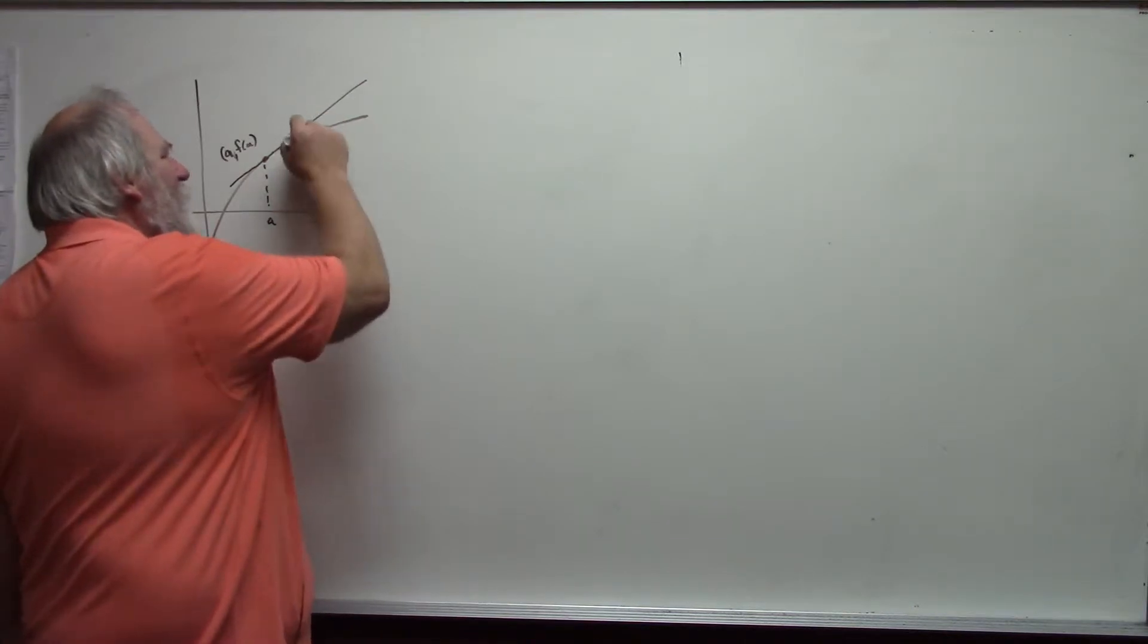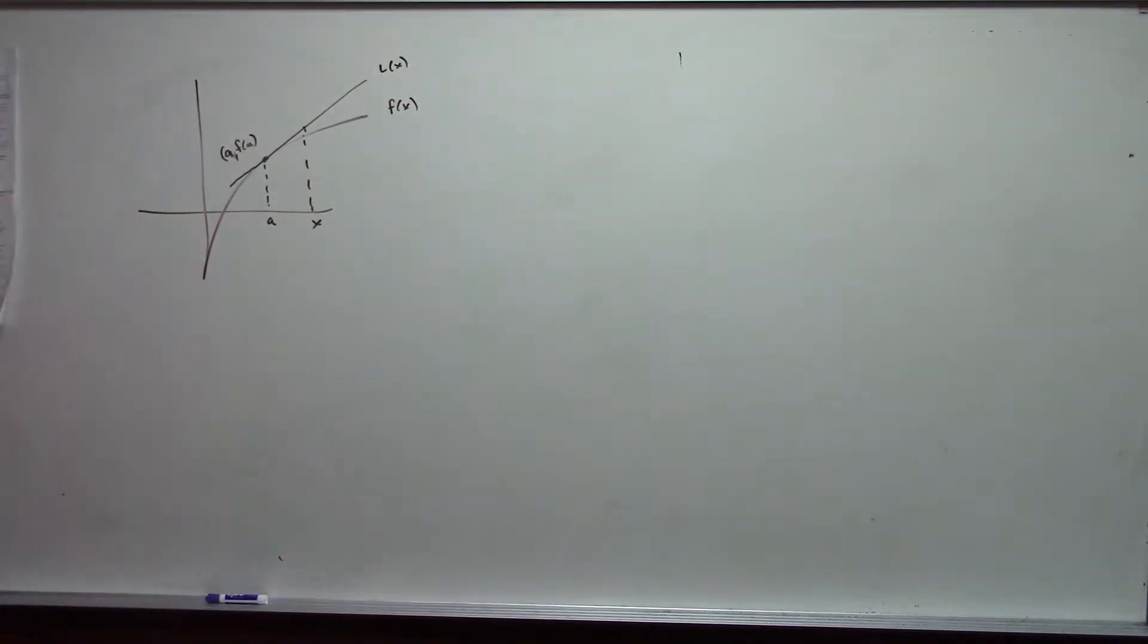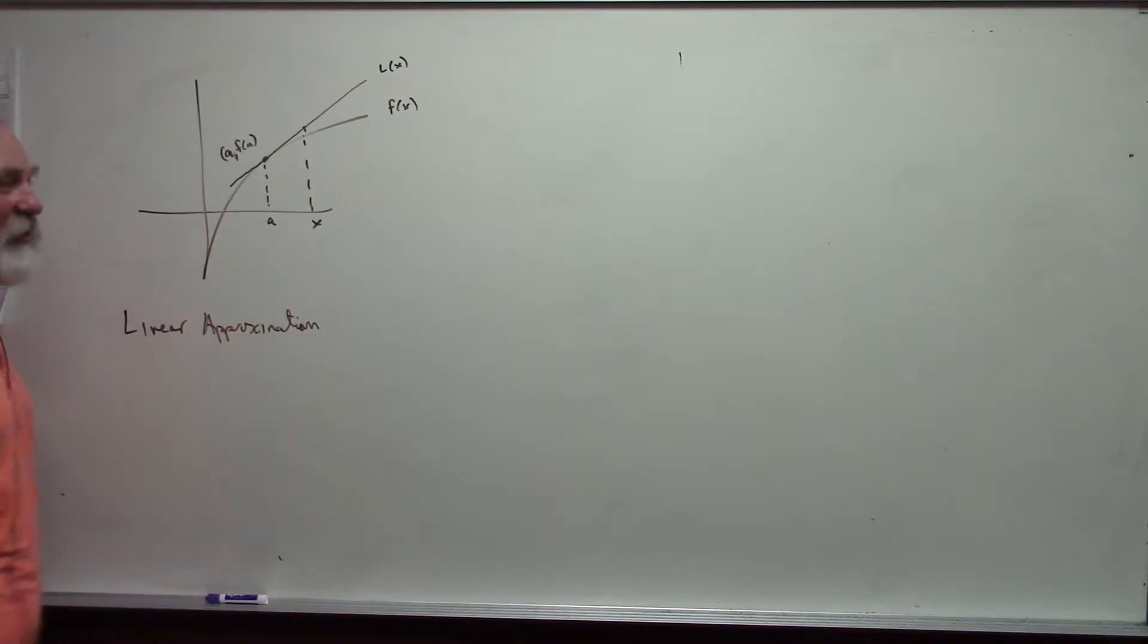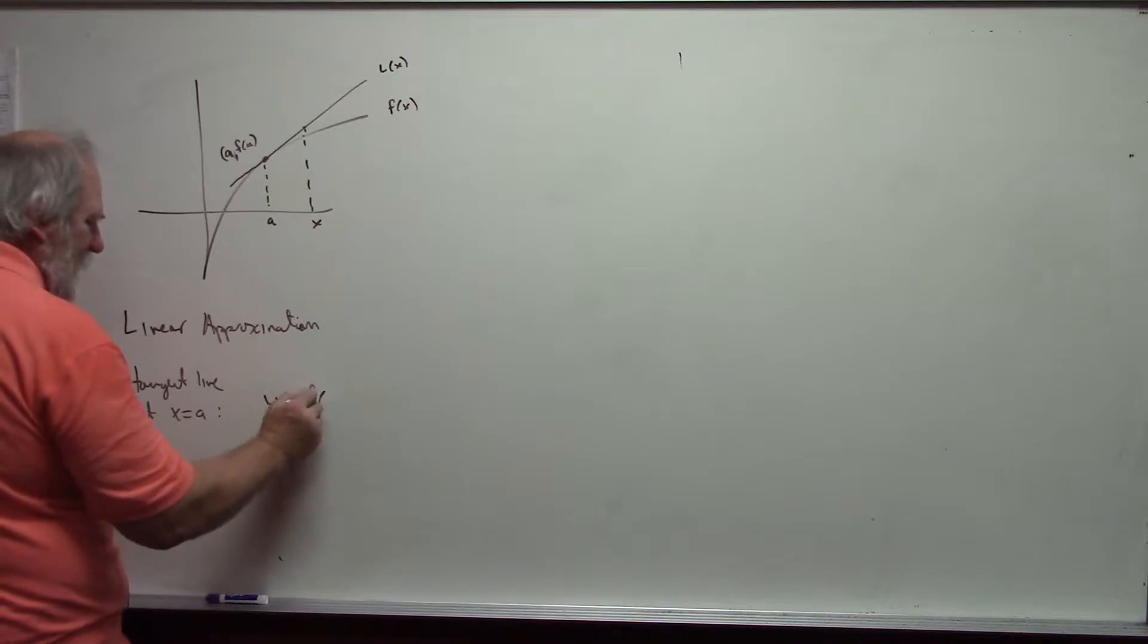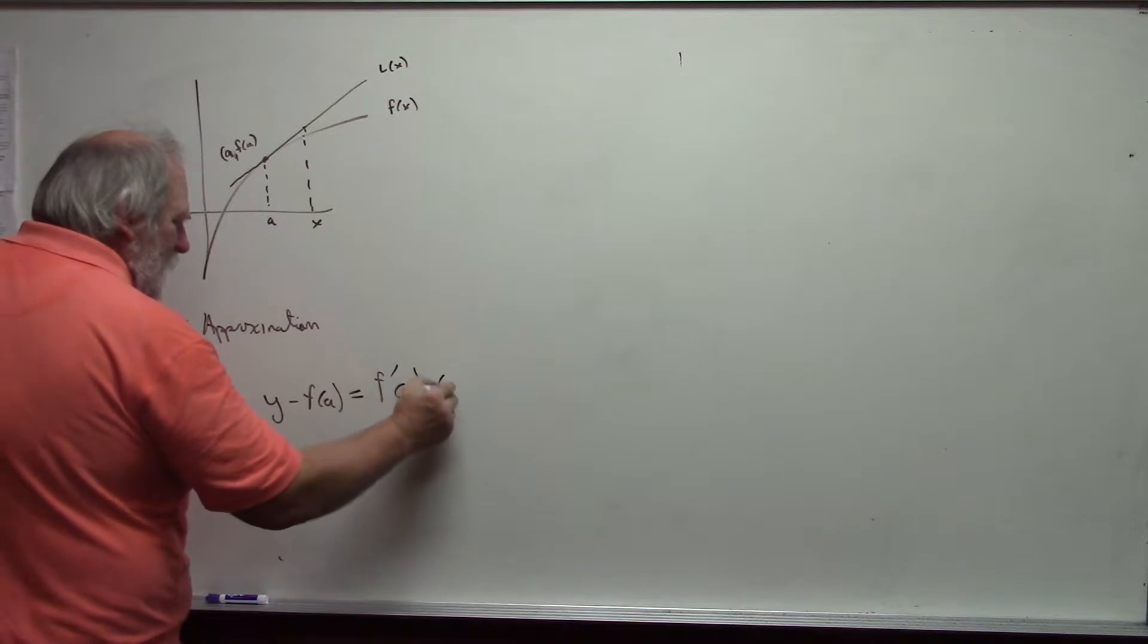The function value is approximated by the tangent line value, and this is called linear approximation. To do this, I need the equation of the tangent line, and so we will build that. The tangent line at x equal a would be y minus f of a is equal to f prime at a times quantity x minus a.